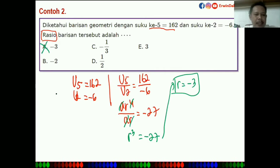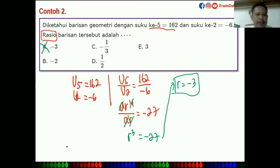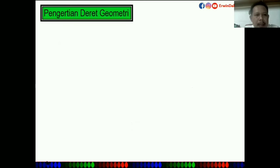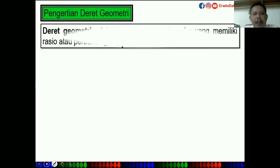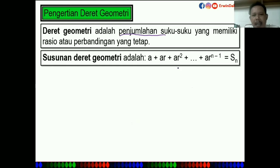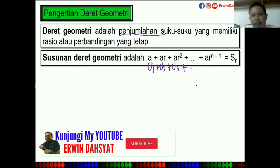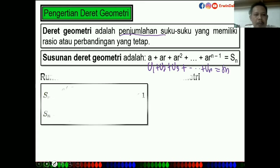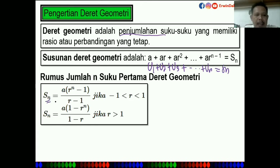Selanjutnya adalah deret. Deret berkaitan dengan jumlah. Secara umum: U1 + U2 + U3 + ... + UN disebut SN. Rumus jumlahnya adalah SN = A(R^N - 1) / (R - 1).